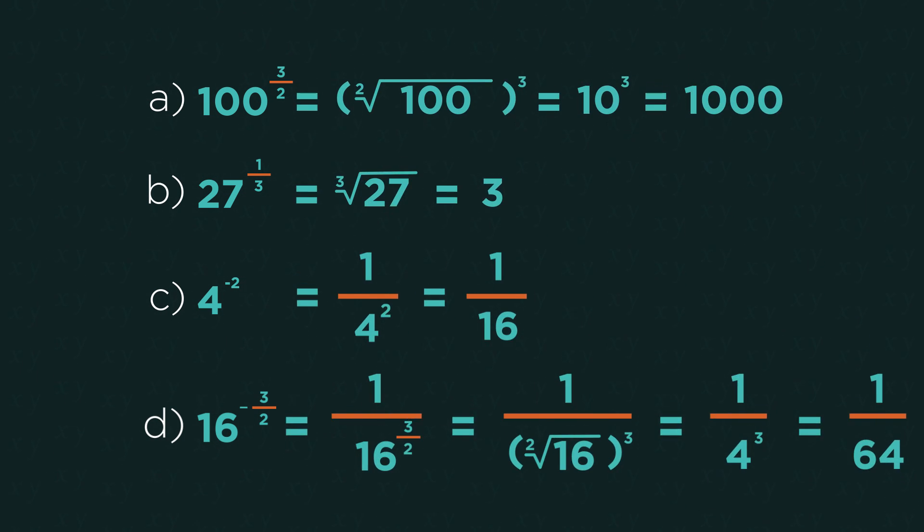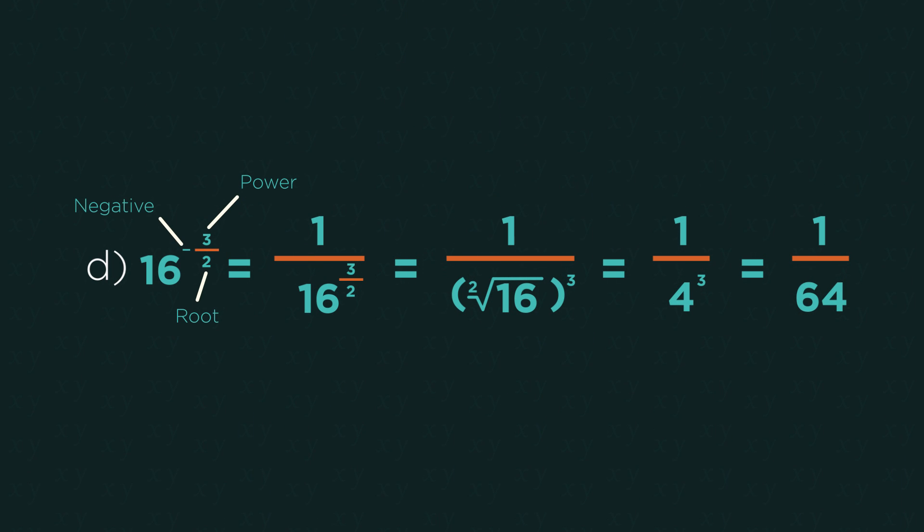Did you get them right? On that last one, we need to combine negative and fractional indices. I always do the negative first, then the root, then the power. But again, you can actually do it in any order.